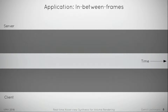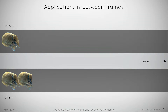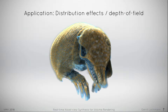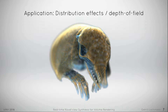The second application is temporal upsampling in a distributed renderer. Here, the computationally powerful render server transmits keyframes to a display client, and the client uses reprojection to generate in-between frames. The third example is distribution effects. To generate depth of field, a source image is reprojected multiple times to generate multiple samples over a camera lens, and the blur results from averaging these samples.